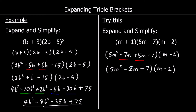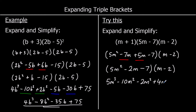And then expanding and simplifying again. 5m squared times m is 5m cubed. 5m squared times negative 2 is negative 10m squared. Negative 2m times m is negative 2m squared. Negative 2m times negative 2 is positive 4m. Negative 7 times m is negative 7m. And negative 7 times negative 2 is positive 14.